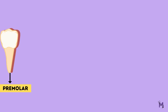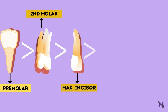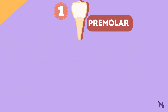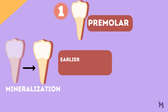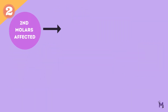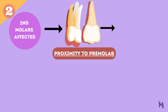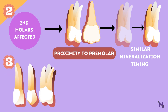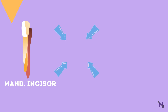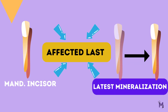The premolar is usually affected by fluorosis first, followed by the second molar, maxillary incisor, canine, first molar, and mandibular incisors. Premolars are often the first to be affected because they undergo mineralization earlier than the other teeth, and their development overlaps with a period of high susceptibility to fluoride exposure. Second molars are also commonly affected due to their proximity to premolars and similar mineralization timing. Maxillary incisors, canines, and first molars follow in susceptibility because they mineralize later in the developmental sequence. Mandibular incisors are typically affected last since their mineralization occurs latest.